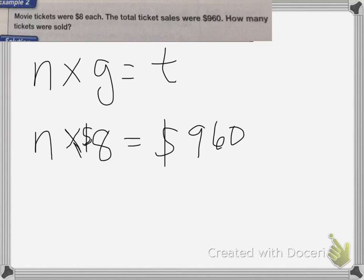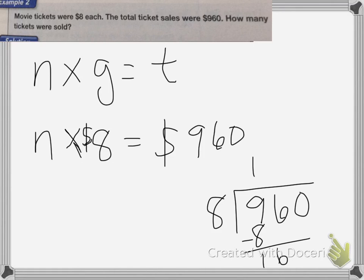So to find my missing number, n, I'm going to have to divide 960 divided by 8. 8 goes into 9 once. That's 8. Subtract 1, 6. 8 goes into 16 twice. That's 16, which zeroes out. And I still have this zero on the end that I'm going to bring up. So there are 120 tickets sold.